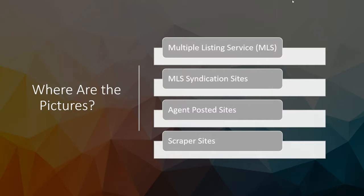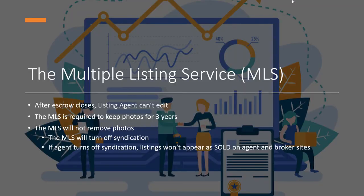And then scraper sites are sites that just go around other websites and scrape data so they can put listings on their website. That's even harder to get them to remove because they're already ignoring the rules to begin with. As for the multiple listing service, once escrow has closed, the listing agent can edit it — they can go in and delete the pictures. However, in California, the MLS isn't going to remove the pictures because there's a California civil code section that says they have to keep them for at least three years.